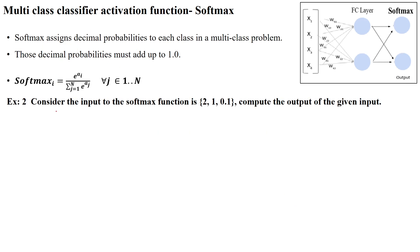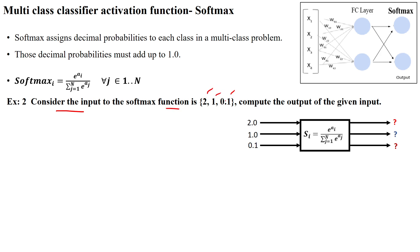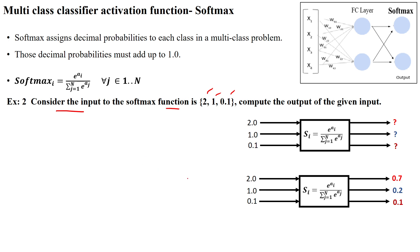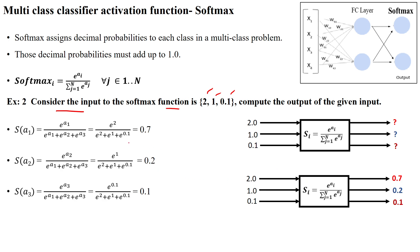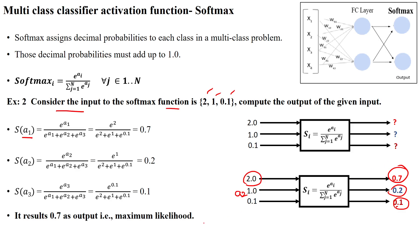Another problem: consider the input to the softmax function is 2, 1, and 0.1. When substituting these values, the output for the first input is 0.7, for a2 it is 0.2, and for a3 it is 0.1. The maximum probable value is 0.7, so that is the output class of this given input to the softmax function.